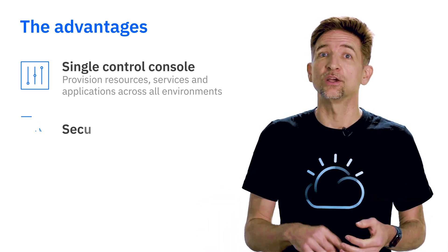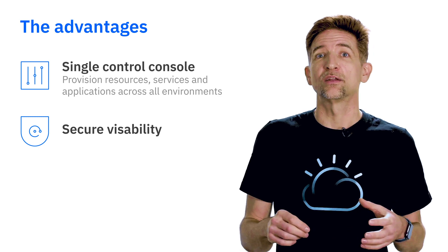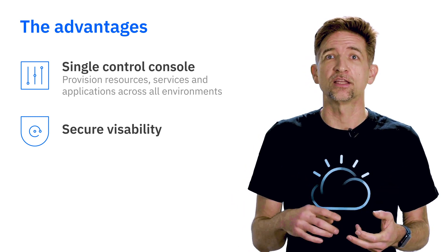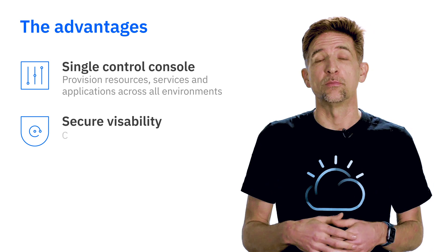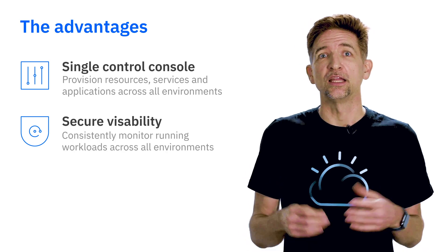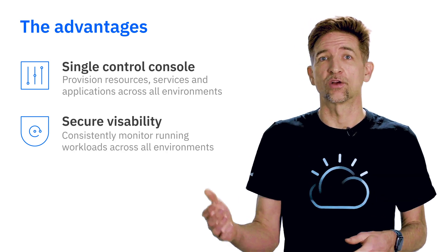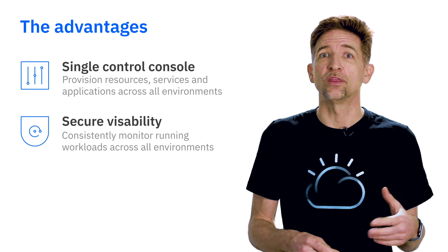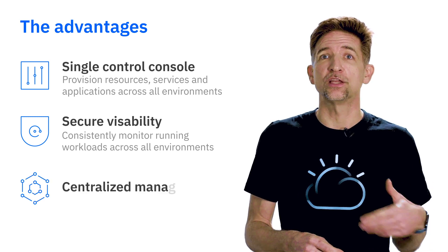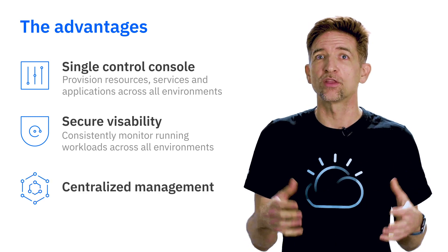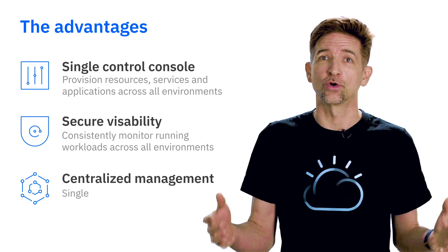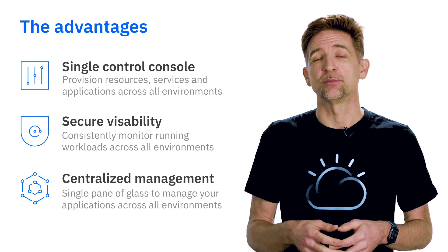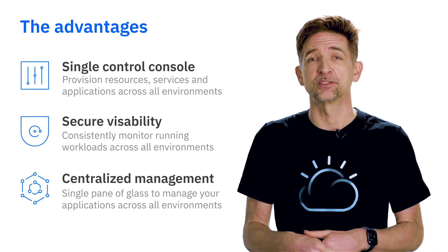You get a single way to do security. You also get common observability — logging, monitoring, dashboards, and alerts — that allow you to monitor the workloads running consistently across all these environments. We're also doing work in Satellite to help you with inventory and change management. So part of the power of Satellite is this common control plane, or single pane of glass, that allows you to manage your applications across a diverse set of environments.